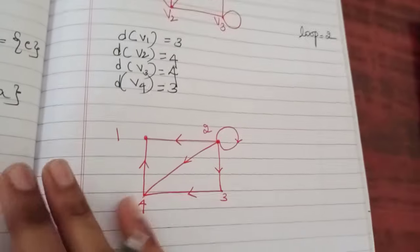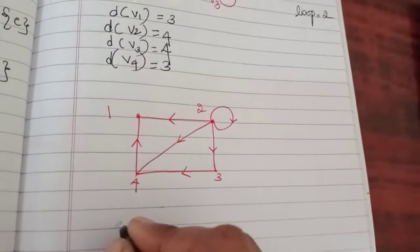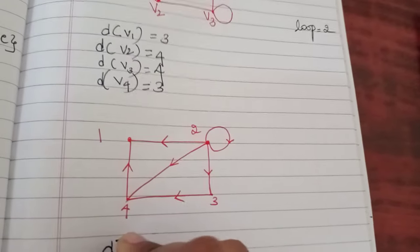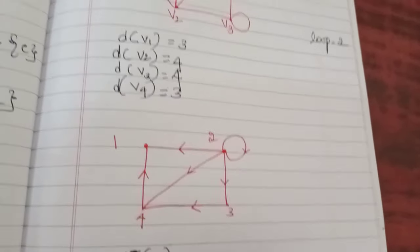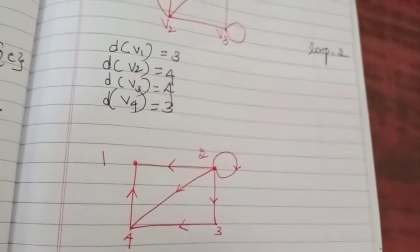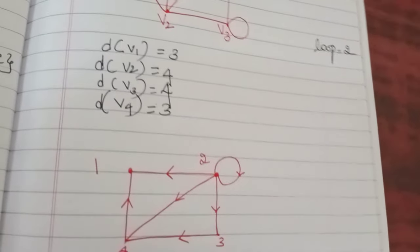So this is for undirected graph. If you have a directed graph, you will have in-degree and out-degree. For in-degree it is minus of v, for out-degree it is plus of v.